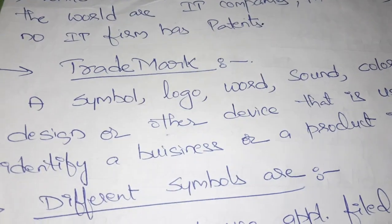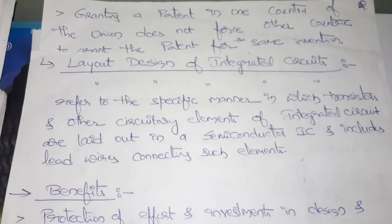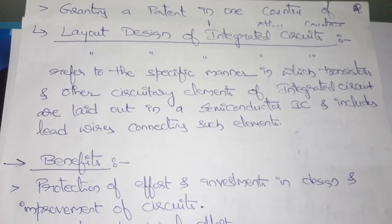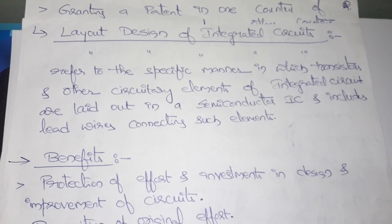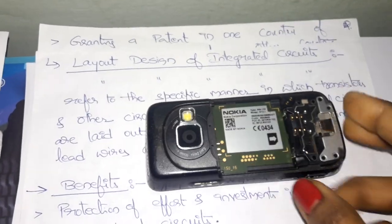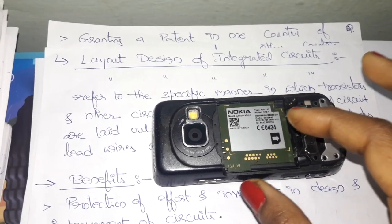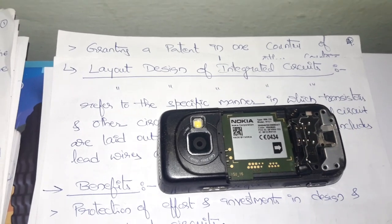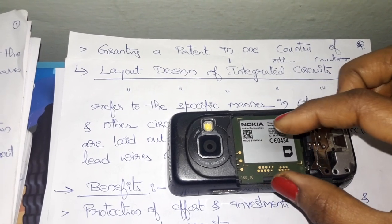Now we will see the layout design of integrated circuits. Layout design of integrated circuits means the internal circuits of an integrated circuit or semiconductor should not be copied. For example, this Nokia phone has some internal circuitry design — semiconductor chips, transistors, and so on. The same internal circuit design should not be copied by other mobile phones like Samsung, LG, and so on. If you register this integrated circuit design, it will be protected.